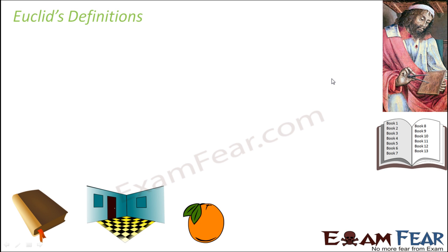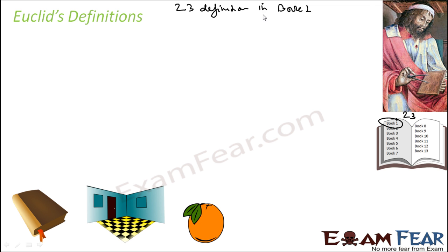Euclid summarized all of these statements and called them definitions. Book one has 23 definitions. Overall there are 100 plus definitions in this complete book. I can give some examples of a few of them.